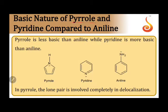The basic nature of pyrrole, pyridine, and aniline will be compared. Pyrrole is a five-membered heterocyclic compound with four carbons and one nitrogen. Pyridine is a six-membered heterocyclic compound with five carbons and one nitrogen. Aniline is not a heterocyclic but a homocyclic compound, meaning all the atoms in the ring are carbon — a benzene ring with an NH2 group attached.